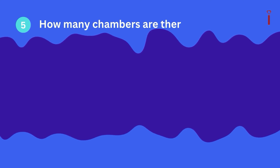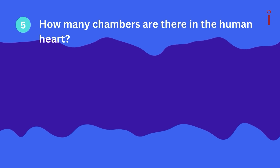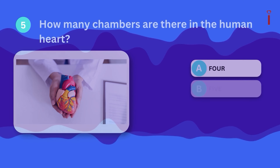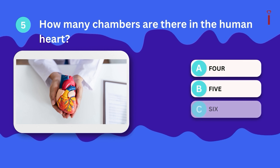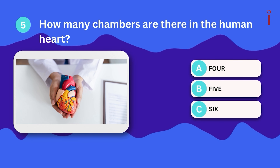Question 5: How many chambers are there in the human heart? A. 4, B. 5, C. 6.